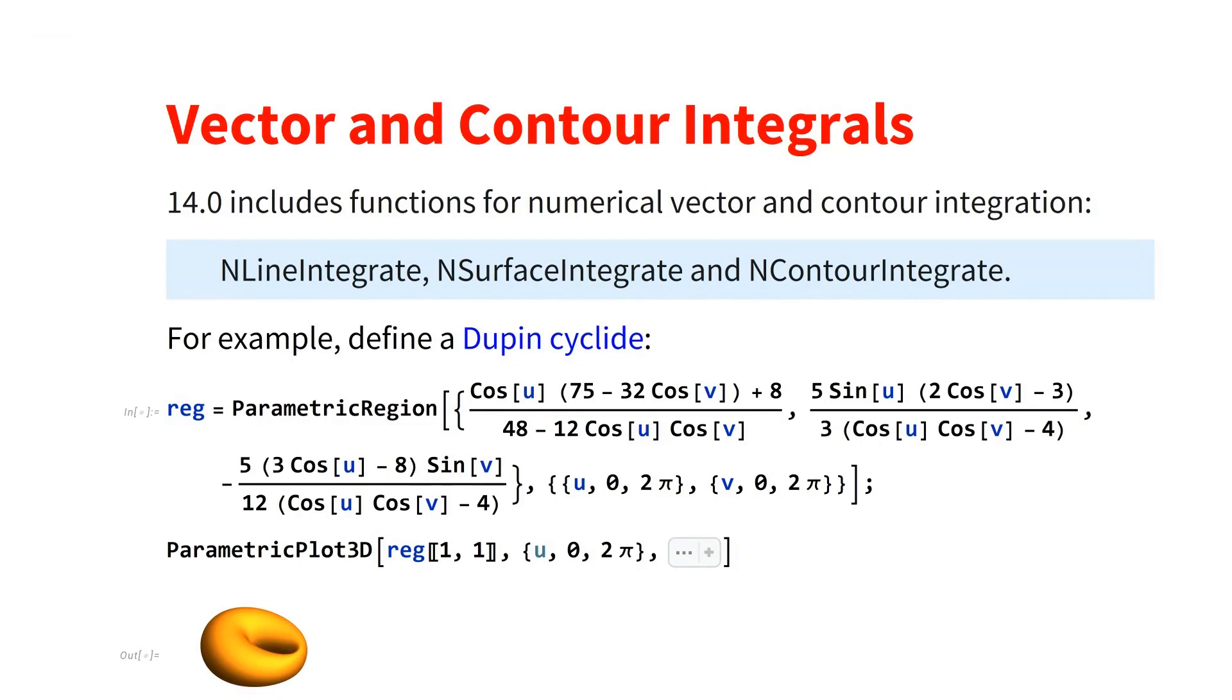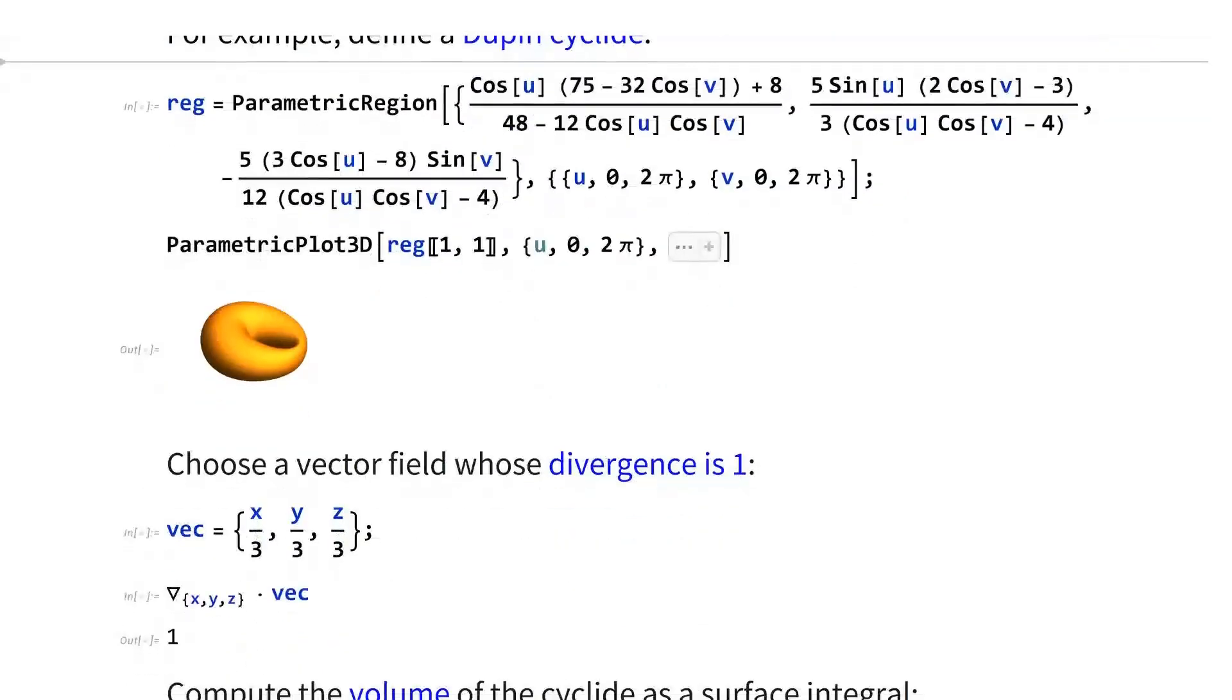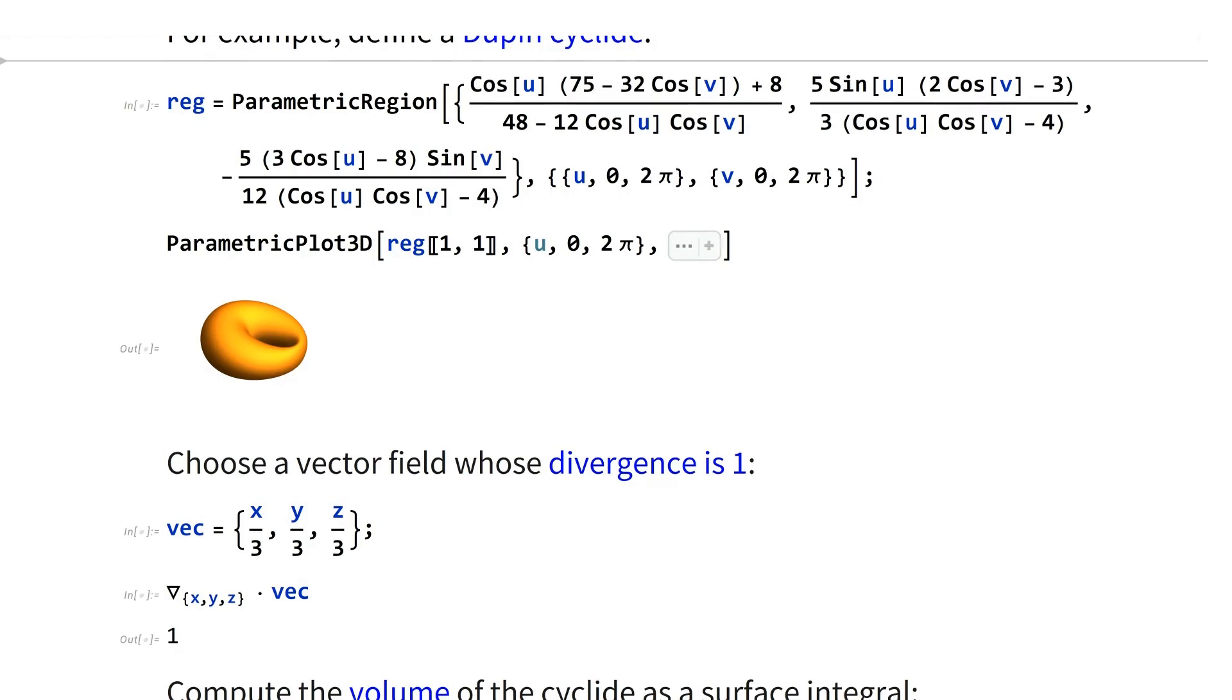And why would you need those? Well, as an example, let's look at this classical figure called a Dupin cyclide. And now what you can do is you can ask the question, what is the volume of this Dupin cyclide? Now, the point is you probably just want a numerical approximation. You don't want the exact answer.